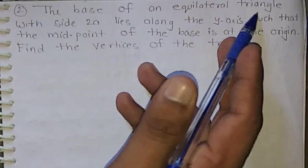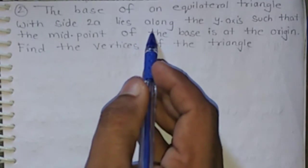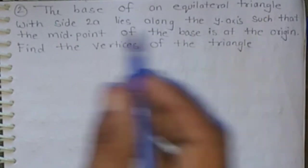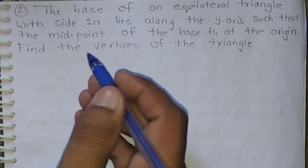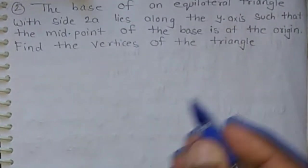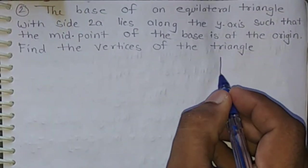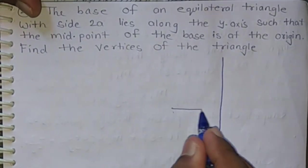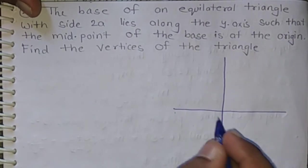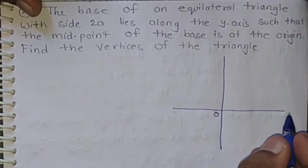Q2. The base of an equilateral triangle with side 2a lies along the y-axis such that the midpoint of the base is at origin. Find the vertices of the triangle.